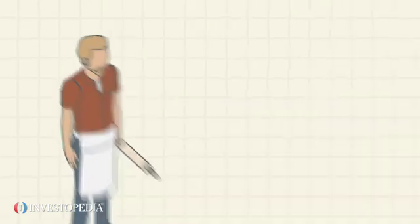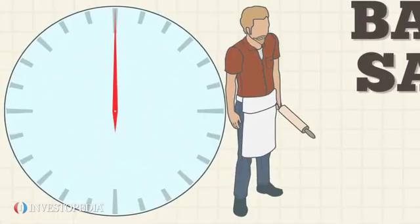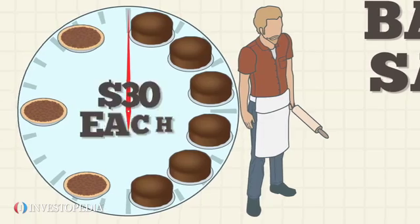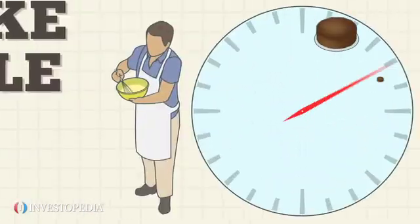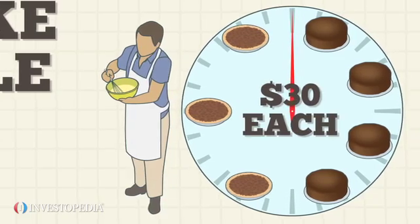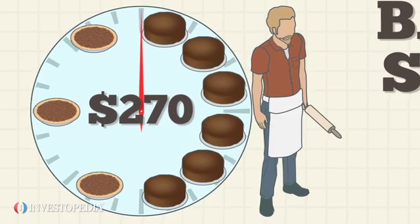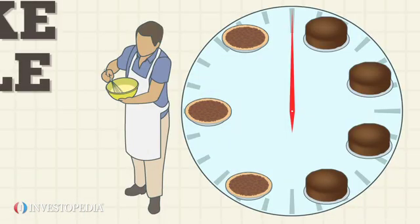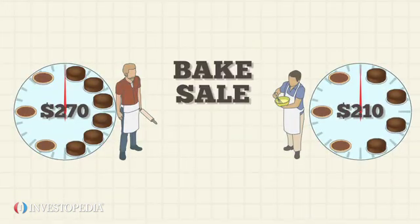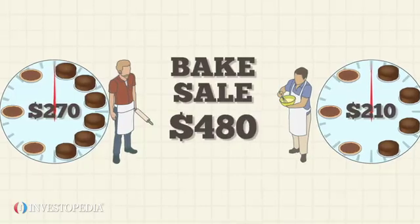Suppose David and Lawrence want to raise money for their favorite charity through a bake sale. On a normal day, David can bake six chocolate cakes and three pecan pies for $30 each. Lawrence can bake four cakes and three pies in one day, also for $30 each. David is baking nine treats per day and earning $270, while Lawrence is baking seven treats per day and earning $210. Together, they can make a total of 16 treats and sell them for a total of $480.